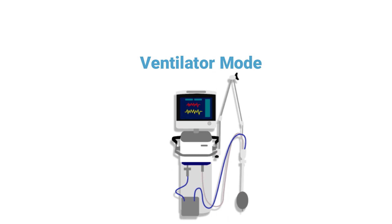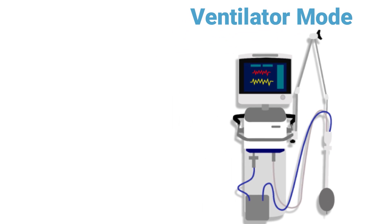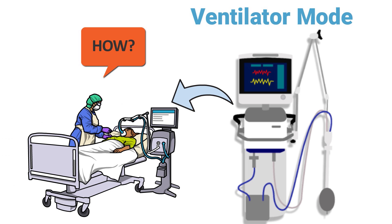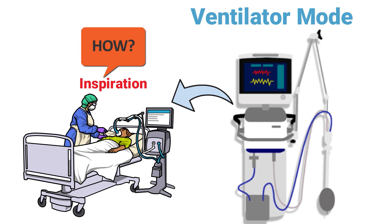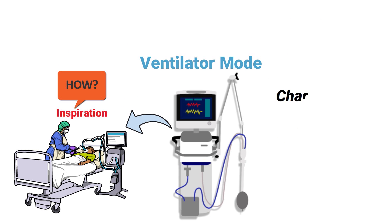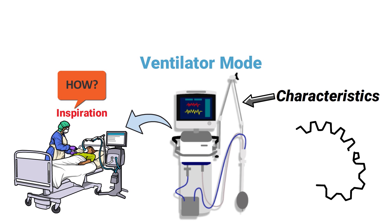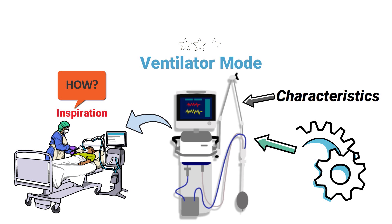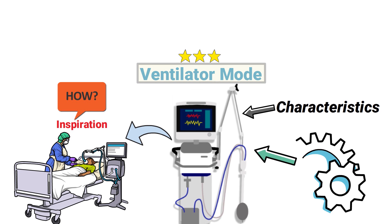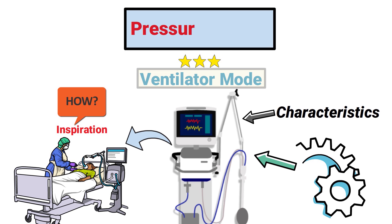A ventilator mode is a way of describing how the mechanical ventilator assists the patient with inspiration. The characteristics of a particular mode control how the ventilator functions. Understanding each of the different modes is one of the most important aspects of mechanical ventilation, and one of the primary control variables we need to talk about is pressure control.